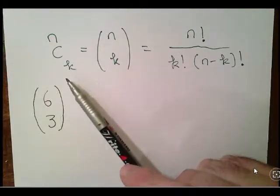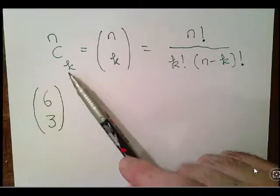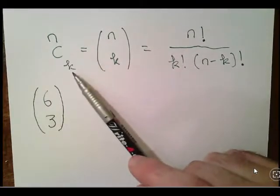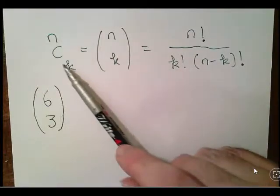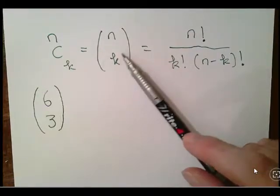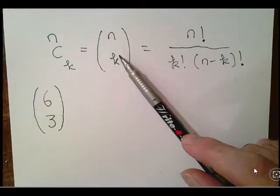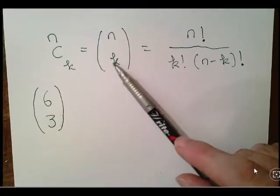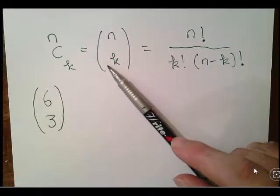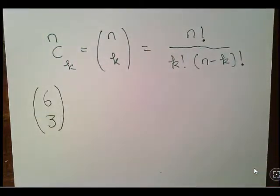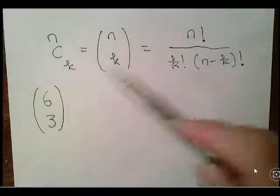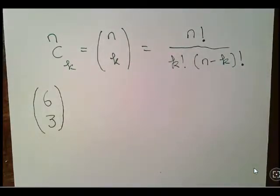This is two different types of notation, n choose k. We have a superscript to the left and a subscript to the right, n on the left, k on the right and c in the middle. Another notation is n over k, or not over k actually, it's not a fraction, but it's just the way the brackets are laid out, n and k, like a matrix of sorts. The two notations are equivalent to each other.